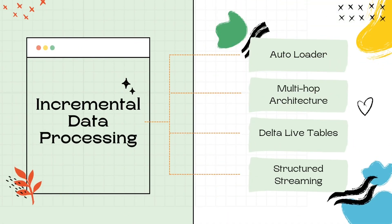The Incremental Data Processing section covers all data processing techniques like Autoloader, medallion or multi-hop architecture, and Delta Live Tables. You could also be asked questions about the applications and usage of Structured Streaming. Most questions will be either code-based or scenario-based, with only two to three being direct. For example, you could be asked about the sources and targets of the bronze, silver, and gold layers of the multi-hop architecture, or to choose the correct code block to perform hops between different layers.